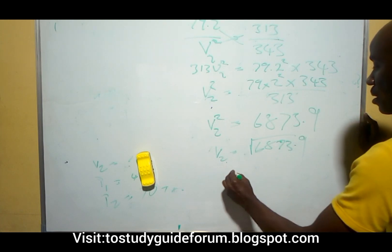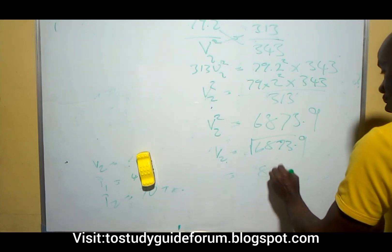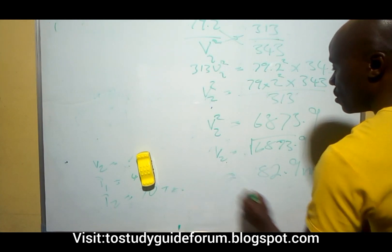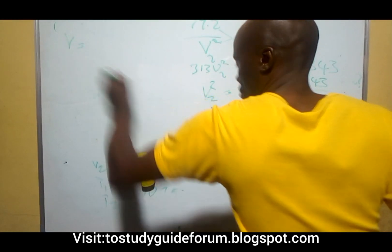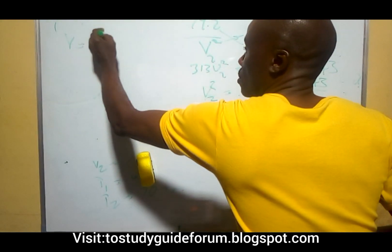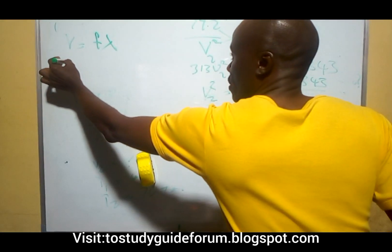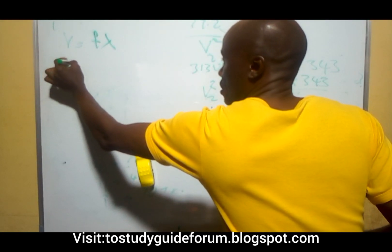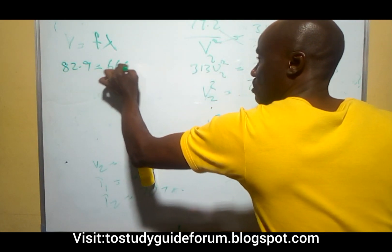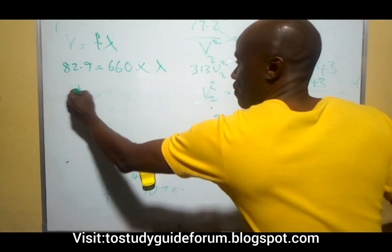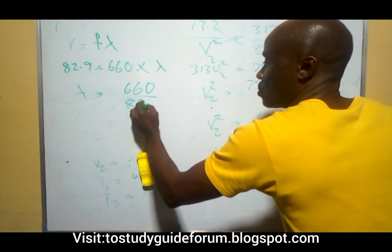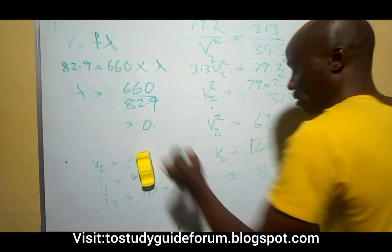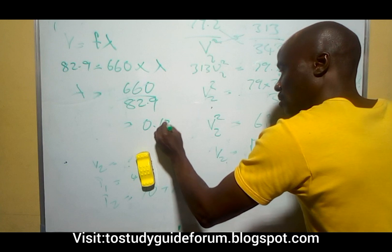Taking the square root of that gives us V2 equals approximately 82.9 meters per second. That is the velocity V2. Now for the last part, we need to find the wavelength. We know that velocity equals frequency times wavelength, so 82.9 equals 660 times lambda. The wavelength will then be 82.9 divided by 660, which gives us approximately 0.131 meter. That is the final answer.